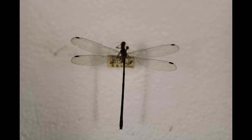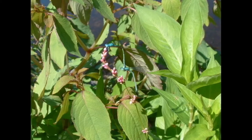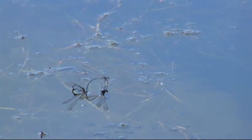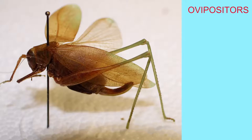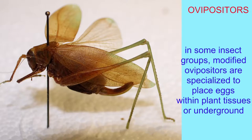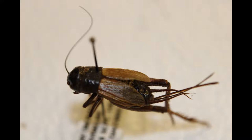Damselflies, for example, use their ovipositors to cut into aquatic plant material and lay their eggs there. Katydids and crickets also possess modified ovipositors, so they can lay eggs underground or cut into plant materials and lay their eggs there.